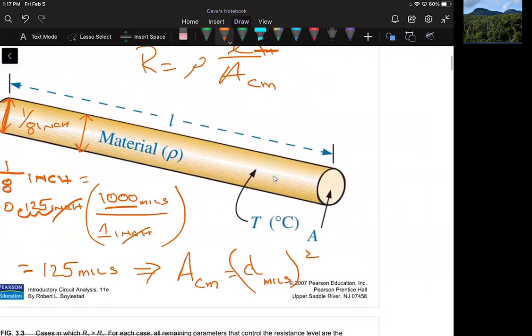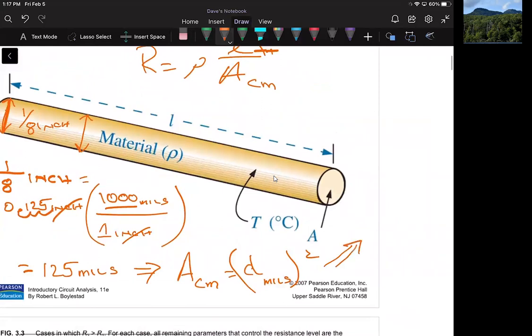And for this particular problem, that's going to be 125 squared. And that will equal 15,625 circular mils. So that is that concept. That's what I want you to take away from this and just get that defined quantity of circular mils.